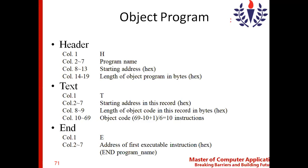Coming to the end record: E denotes the end record. As discussed when we covered assembly language programs, the last line — the assembler directive END — holds the first executable instruction. Same way, here the assembler keeps the address of the first executable instruction. That is the end of the program. These are the contents of the object program.